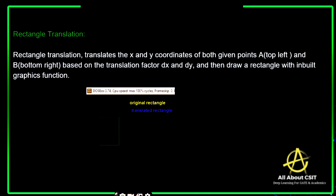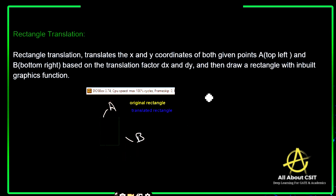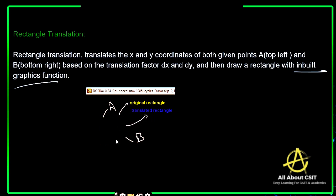Coming to rectangle translation: it translates the X and Y coordinates of both given points. Point A is the top-left corner and point B is the bottom-right corner. Based on the translation factors DX and DY, we draw the rectangle with inbuilt graphic functions. This is the original rectangle and this is the translated rectangle.